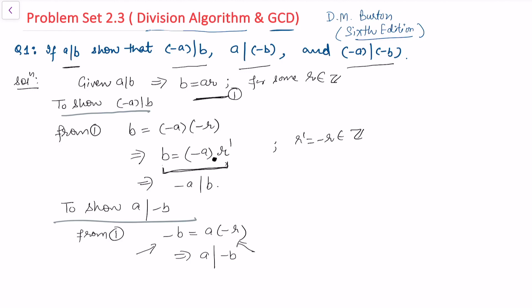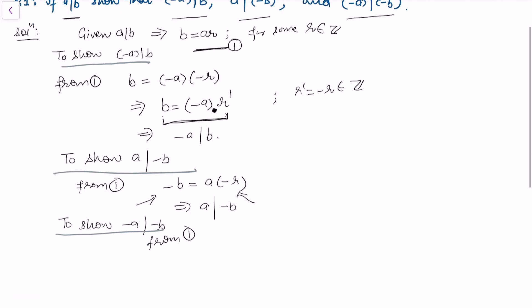To show the third assertion, −a divides −b: from equation (1) we write −b = (−a)·r, so −b appears as a multiple of −a. Hence −a divides −b, which proves the third part of question 1.